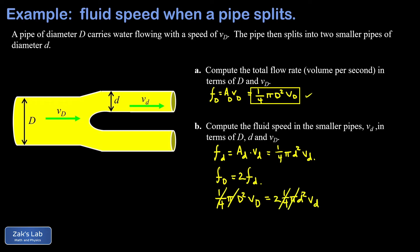What we're trying to do here is find the fluid speed in the smaller pipes, so we divide by two little d squared. And we end up with a nice expression for the fluid speed in the smaller pipes: that's big D squared over two little d squared times the fluid speed in the large pipe. And we're done.